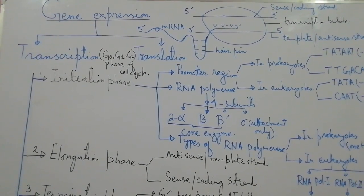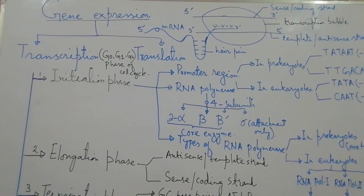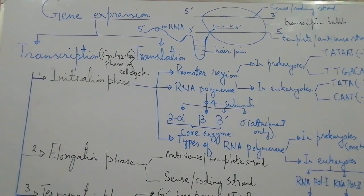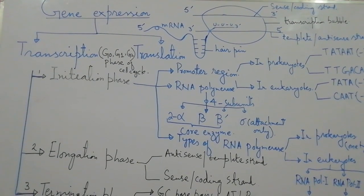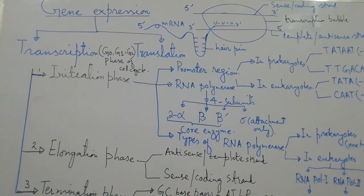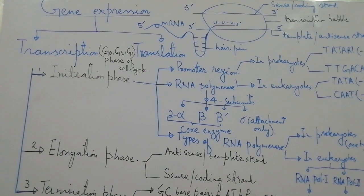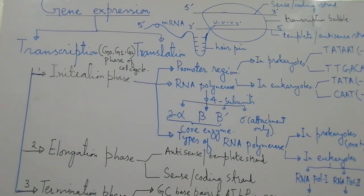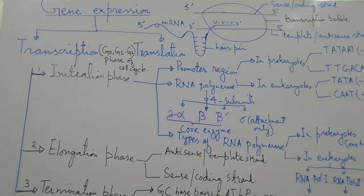Today we will study about gene expression. A gene expresses itself in a protein or enzyme that controls the development of a specific character or function. We can say that proteins are a link between the genotype and phenotype. Gene expression or protein synthesis occurs in two steps: transcription and translation.